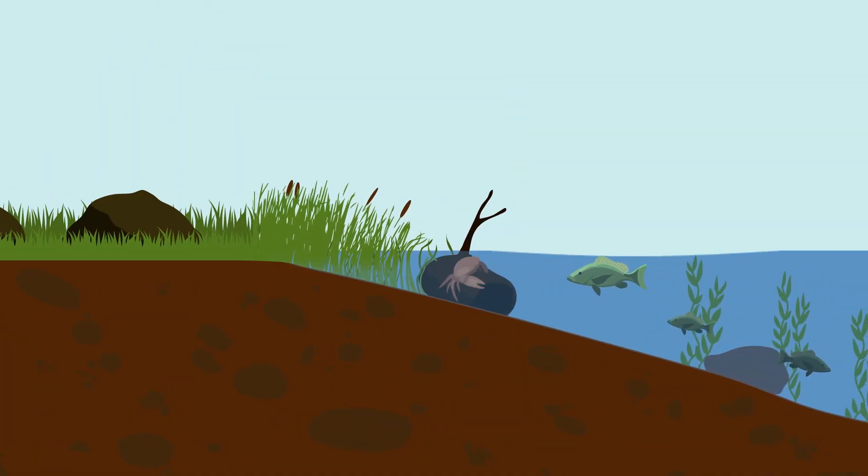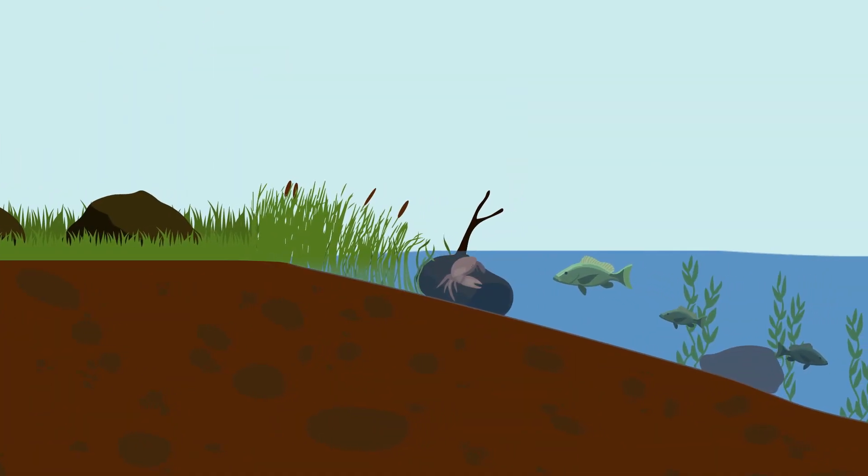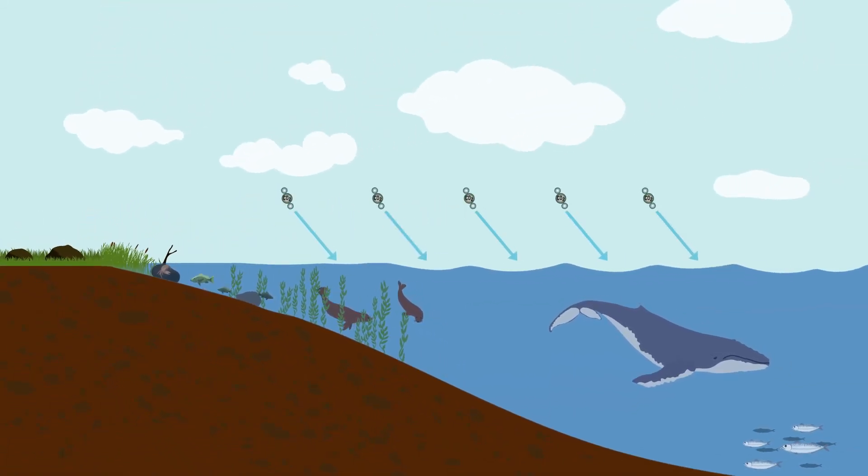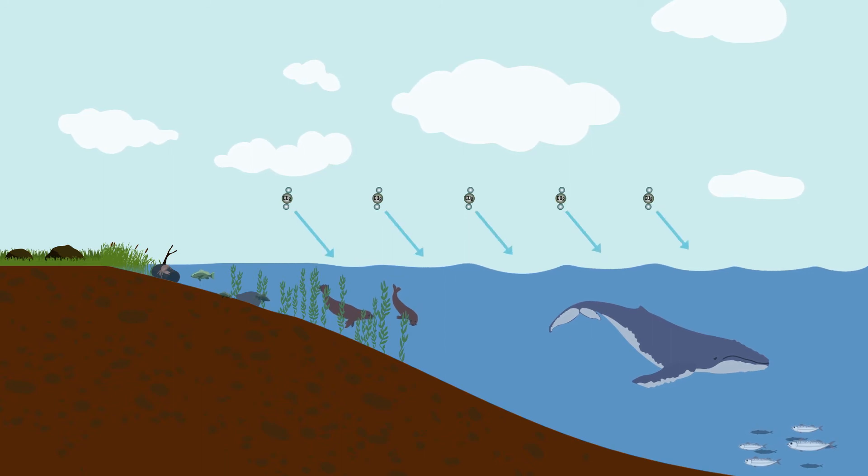Most carbon is stored in rocks and sediments, while the rest is stored in the ocean, atmosphere, and living organisms. These are the reservoirs or sinks through which carbon cycles.